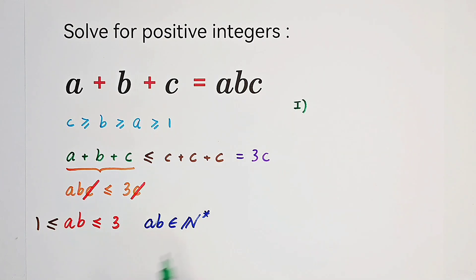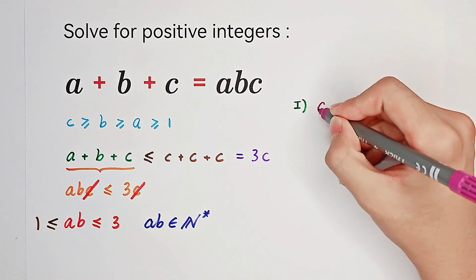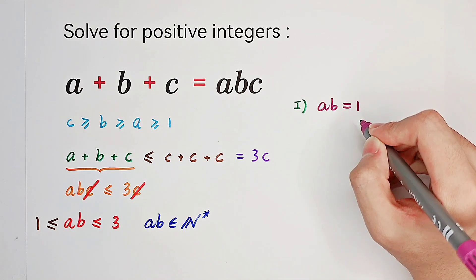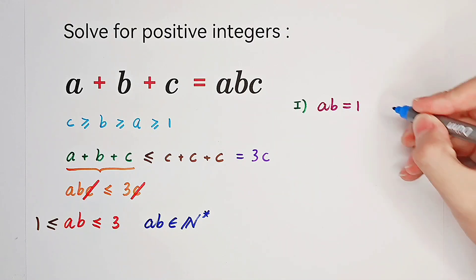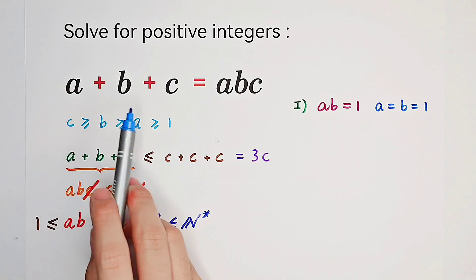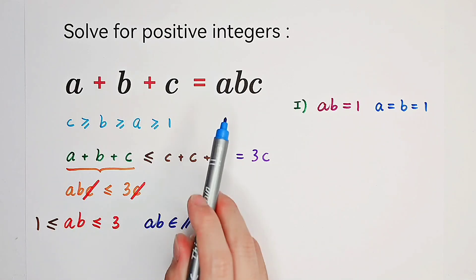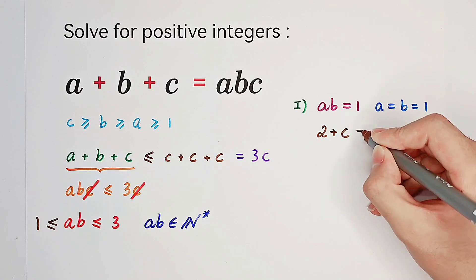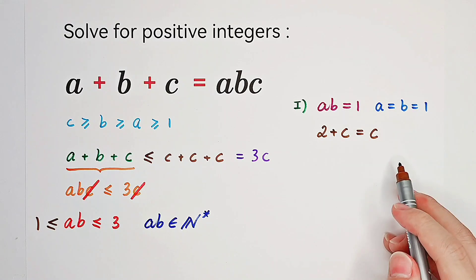The first one is if A times B equals 1. It's very simple. If A times B is 1, since A and B are both positive integers, we can get A and B should both be 1. Then plug it into our original equation. We get 1 plus 1 plus C equals 1 times 1 times C. We'll get an equation about C: 2 plus C equals C, which will never hold. So in this case, the equality doesn't hold.